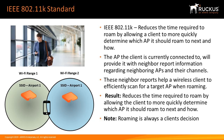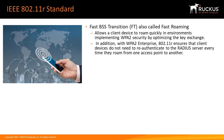As a note, roaming is always a client's decision. 802.11r, fast BSS transition, abbreviated FT, also called fast roaming, allows a client device to roam quickly in environments implementing WPA2 security by optimizing the key exchange.